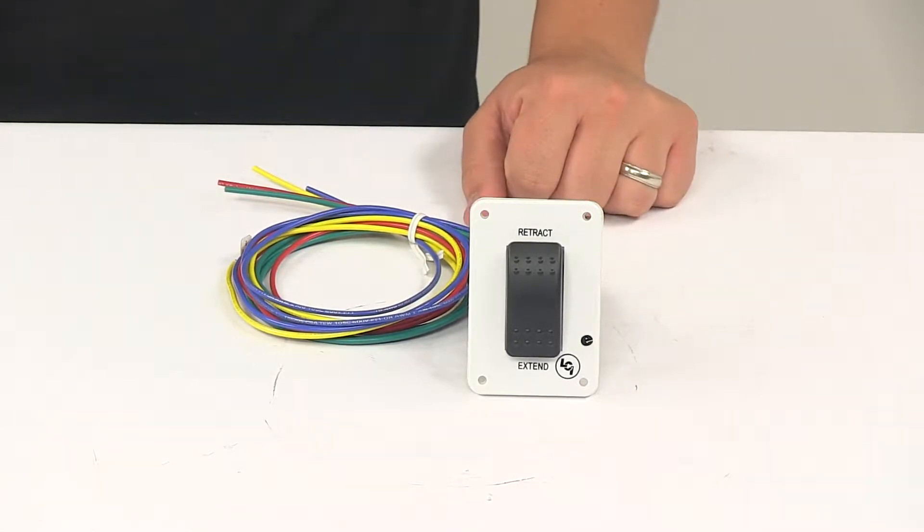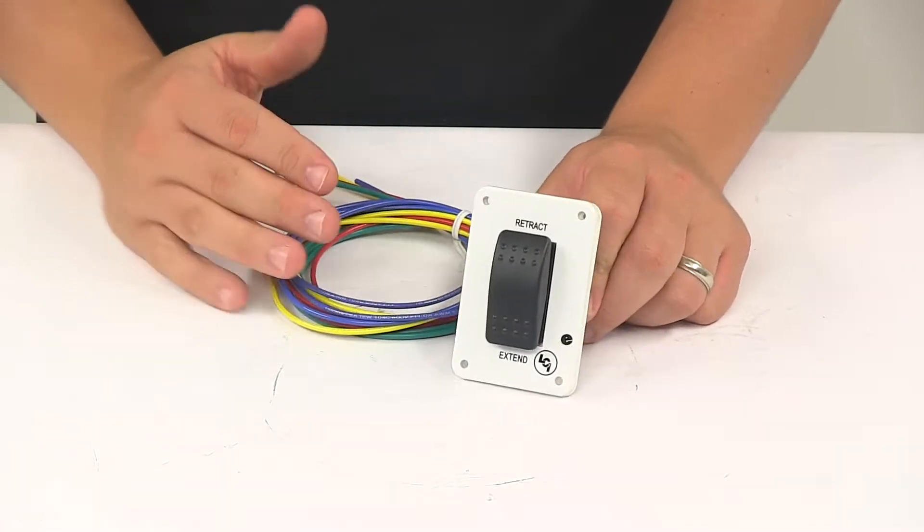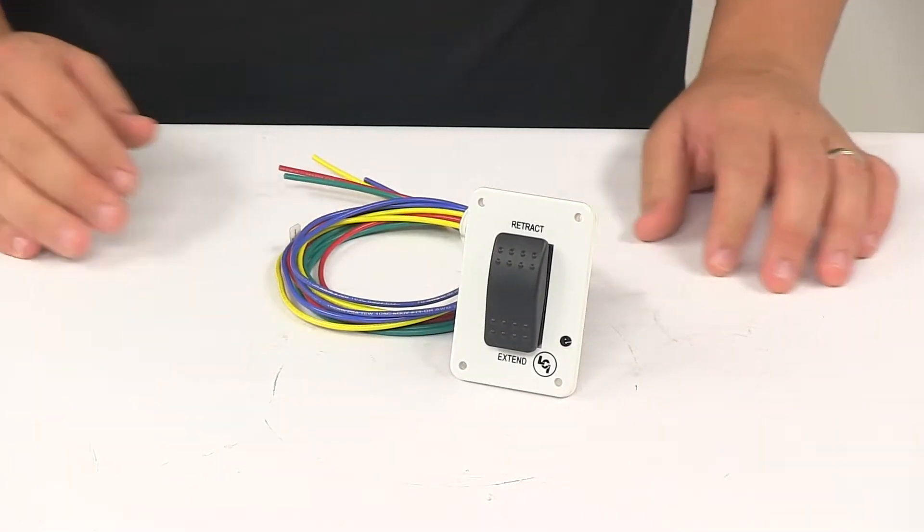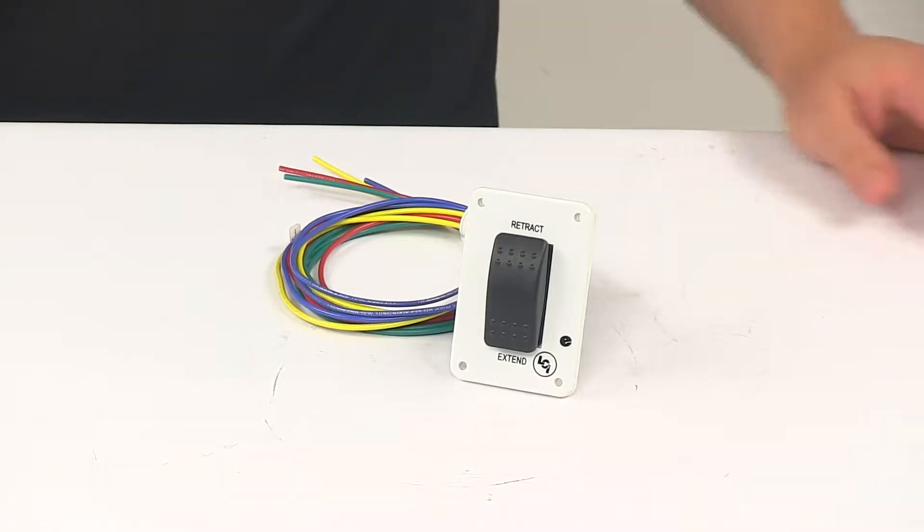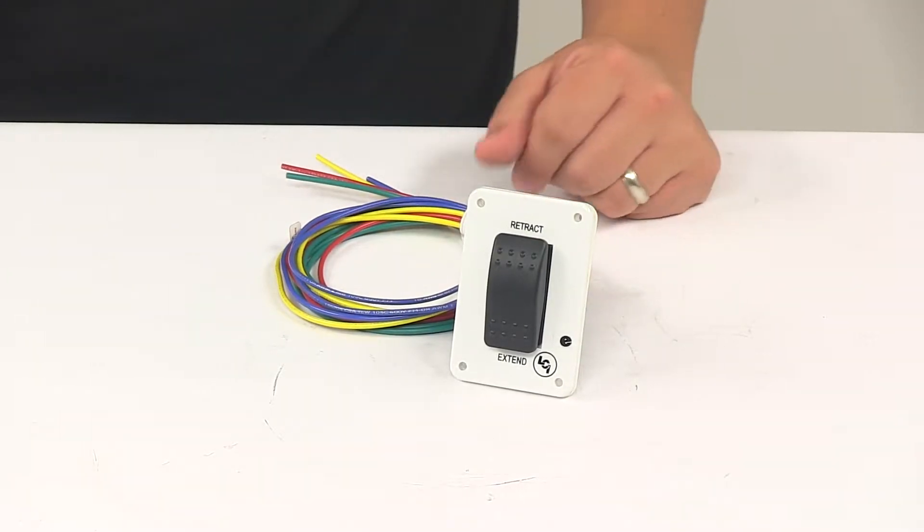Today we're taking a look at the replacement control switch for Lippert Components hydraulic landing gear. This unit replaces the control switch for your Lippert Components aluminum hydraulic landing gear, so you can easily extend and retract your system.